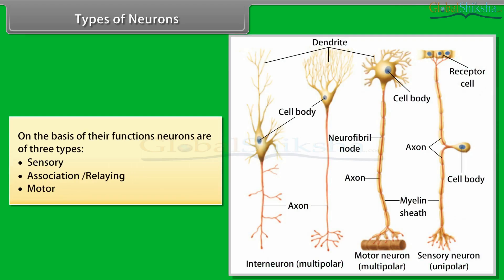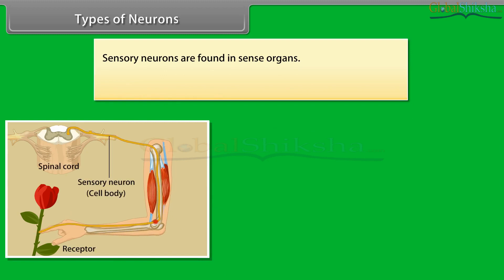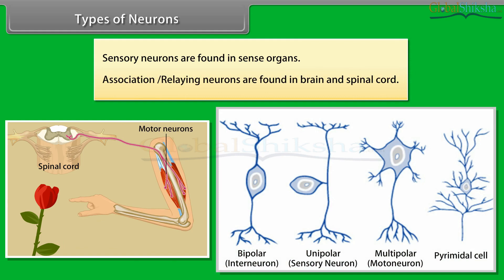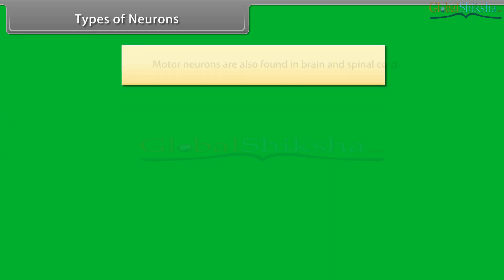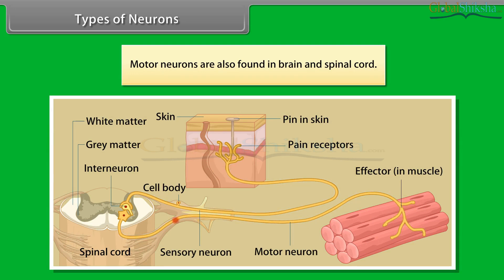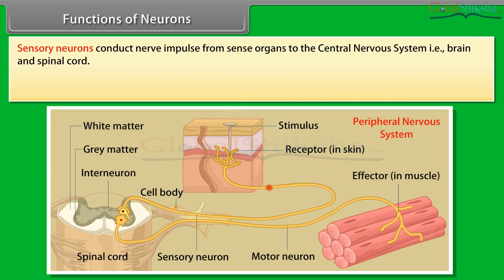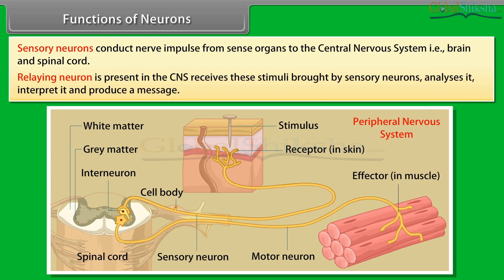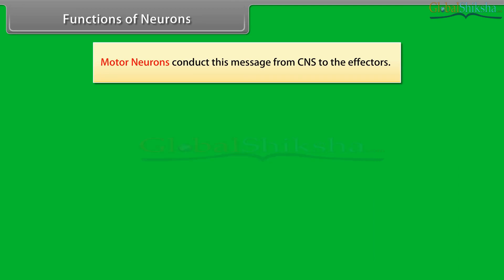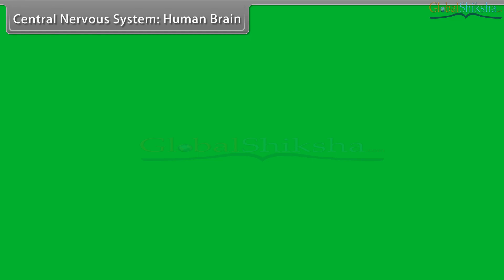On the basis of their functions, neurons are of three types: sensory neurons, association/relaying neurons, and motor neurons. Sensory neurons are found in sense organs; relaying neurons are found in the brain and spinal cord; motor neurons are also found in the brain and spinal cord. Sensory neurons conduct nerve impulses from sense organs to the CNS. Relaying neurons receive these stimuli, analyse and interpret them, and produce a message. Motor neurons then conduct this message from the CNS to the effectors.